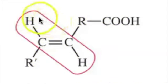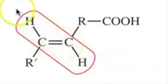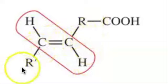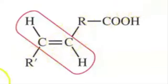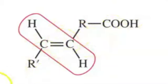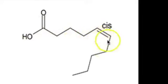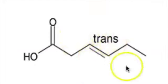The trans arrangement of the double bond has the hydrogens on either side, and this forces the rest of the hydrocarbon chain into a straight overall shape. The chain extends in both directions along a diagonal, resulting in a straight overall fatty acid. So the cis arrangement forces an overall bent fatty acid, and the trans arrangement forces an overall straight fatty acid chain.